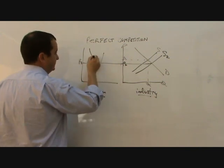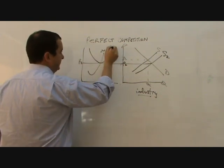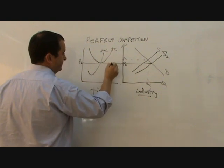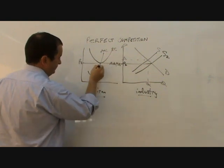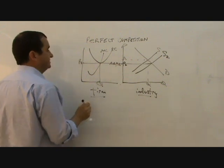There's the MC. There's the AC. This is the AR and the MR. There's the quantity. And as you can see now,